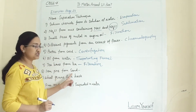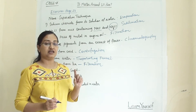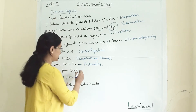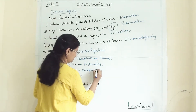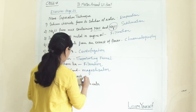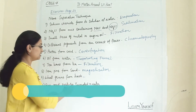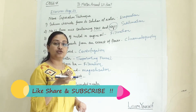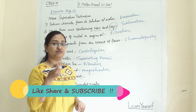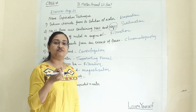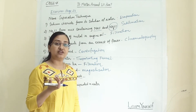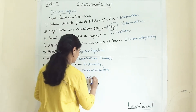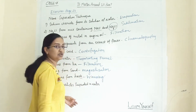Iron filings from sand: whenever iron is one of the substances in a mixture, you can always use the magnetization technique. Then: wheat grains from husk. Husk is the outer cover of the wheat grain and is very light. Here we use winnowing — an age-old technique that every farmer growing wheat uses to separate husk from wheat grain.